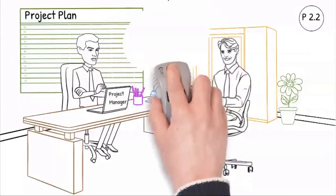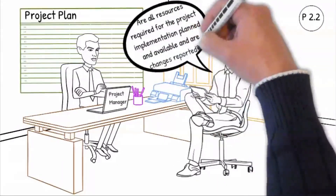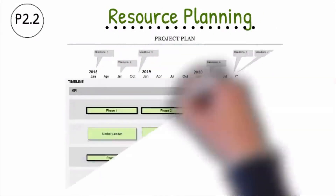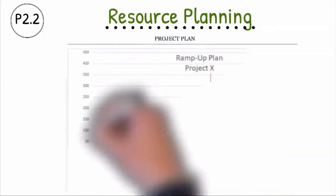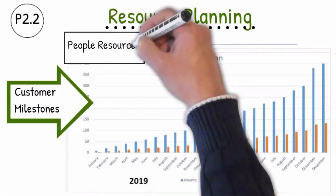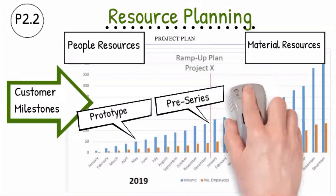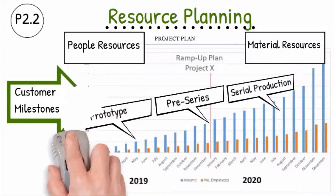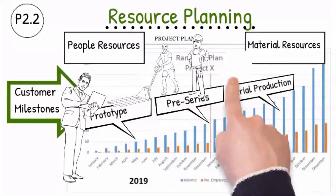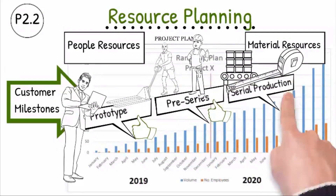Question P2.2: Are all resources required for the project implementation planned and available, and are changes reported? Resource planning takes the customer requirements into account and is based on the contract covering the project. The people and material resources will be made available according to the customer milestones as defined in their ramp-up planning for the different customer build phases, to ensure that all employees, production and test equipment will be available at the right time and capable to achieve the customer volumes. Review and adjustment of resource planning is carried out when changes occur, triggered by the customer as well as internal changes or supplier changes.